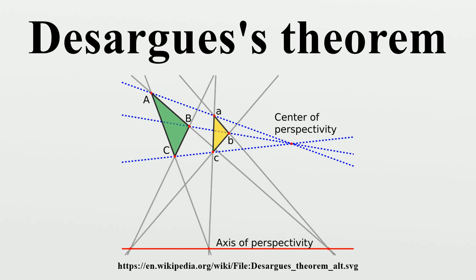This intersection theorem is true in the usual Euclidean plane, but special care needs to be taken in exceptional cases, such as when a pair of sides are parallel so that their point of intersection recedes to infinity. Mathematically, the most satisfying way of resolving the issue of exceptional cases is to complete the Euclidean plane to a projective plane by adding points at infinity, following Poncelet.